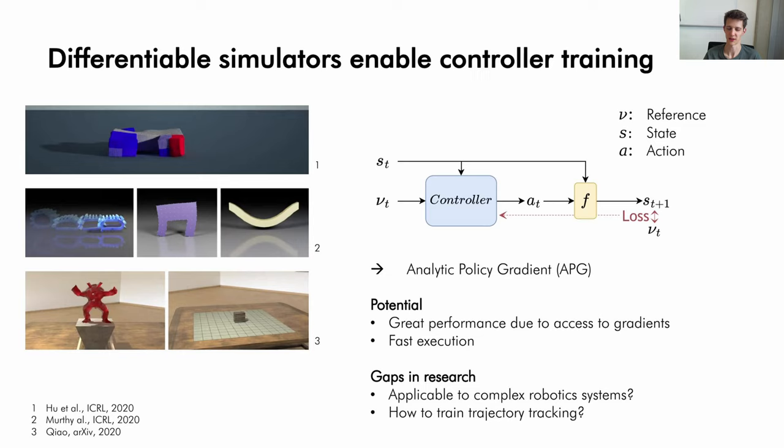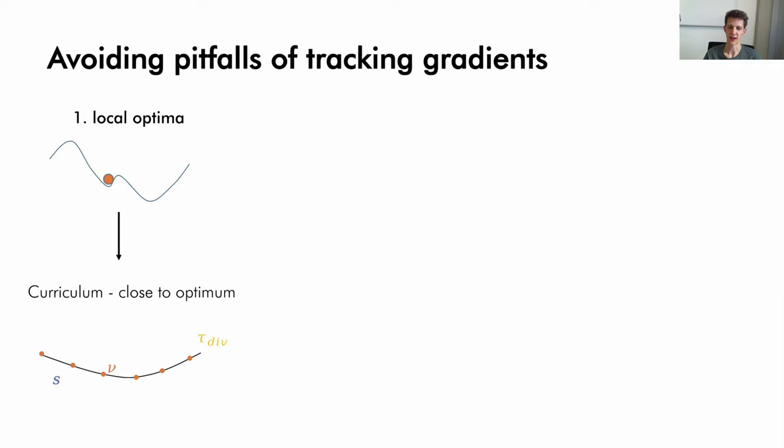Training policies with analytic policy gradient is not straightforward. We identified two well-known pitfalls and addressed them in this work. Firstly, it is prone to get trapped in local minima. We thus propose a curriculum learning approach. This allows us to set a distance threshold around the trajectory. Does the controller go outside of the boundary? We reset the robot onto the trajectory and continue learning. This leads to a more stable process where we stay close to the global minimum.